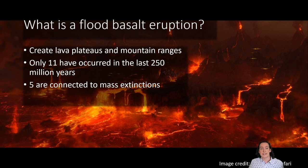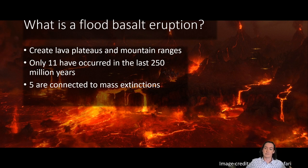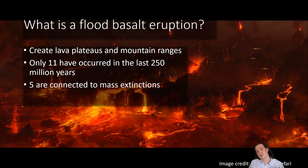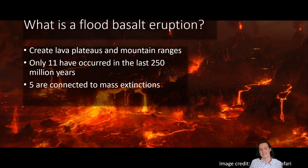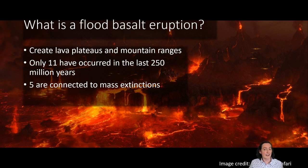What these things produce are large lava plateaus and even mountain ranges built up of lava flows and basaltic rock. Fortunately, these things are quite rare — only 11 have occurred in the last 250 million years. However, they have a dramatic effect on the world around them, because five of these flood basalts are directly connected to mass extinctions. At the time these flood basalts occurred, life was going through a really hard time and a large number of species were being wiped off the face of the Earth.